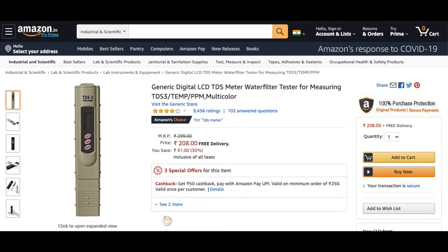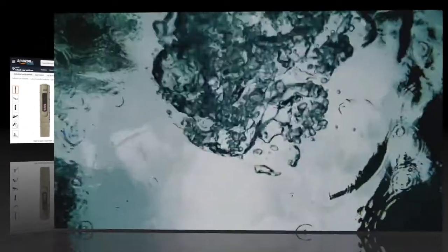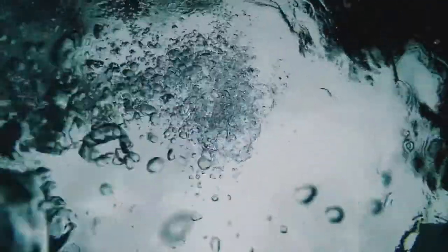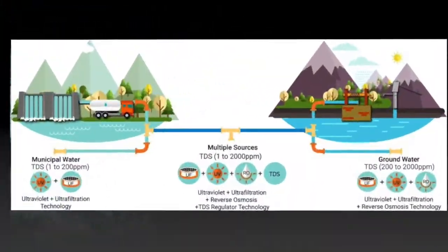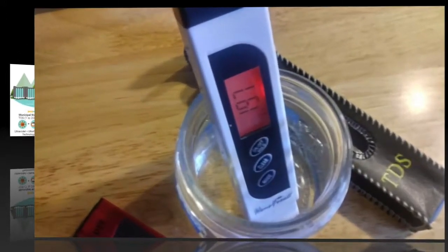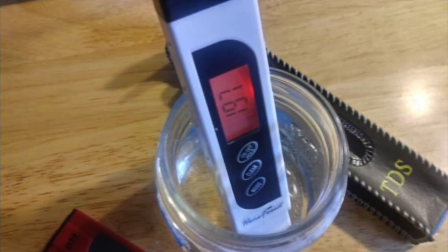A TDS meter costs around 250 rupees. TDS level differs based on the source of water. Let's look at all three possible sources: municipal water, groundwater, and water from mixed sources. The illustration here gives a general guideline on the range of TDS depending on the source of the water. I would still recommend testing the TDS level using a TDS meter.